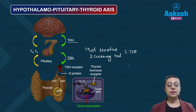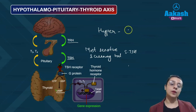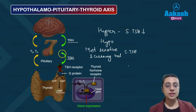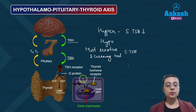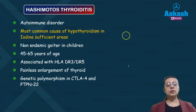TSH causes activation of G-protein coupled receptors and release of cAMP, leading to formation of thyroid hormones. In hyperthyroidism, serum TSH levels will be low. In hypothyroidism, the body compensates by increasing TSH release to synthesize more thyroid hormones, so serum TSH levels will be high.